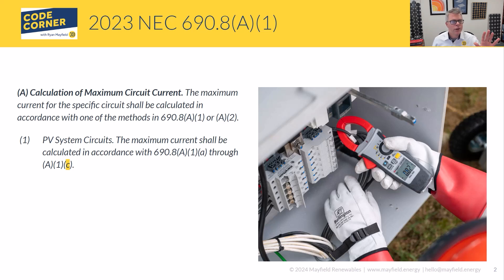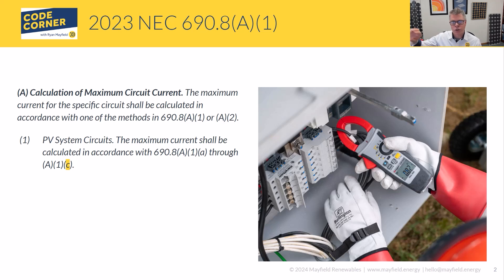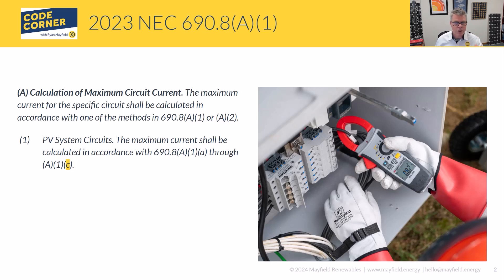The maximum current for PV system circuits is defined in 690.8A1. This covers our circuits straight from our PV modules to whatever our inverter is, our DC-to-DC converter, or something like that — that is what we're talking about with our PV system circuits in this specific case. And the code language takes you through A1A, A1B, and A1C, so let's break those down step by step.